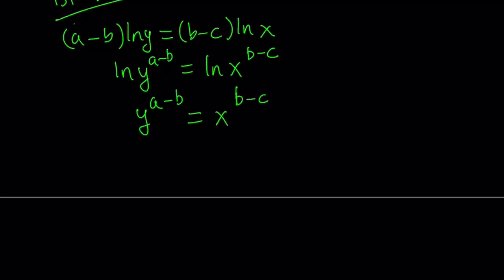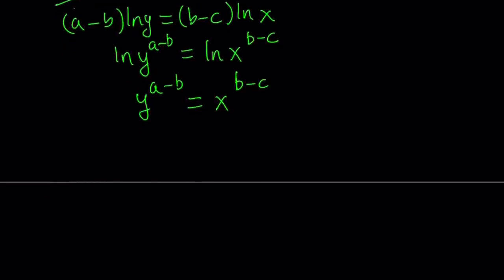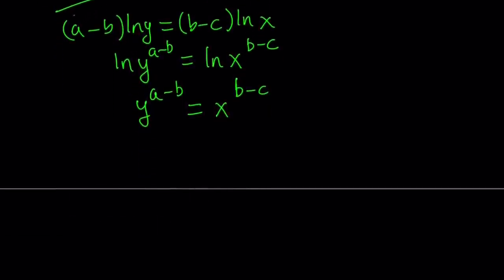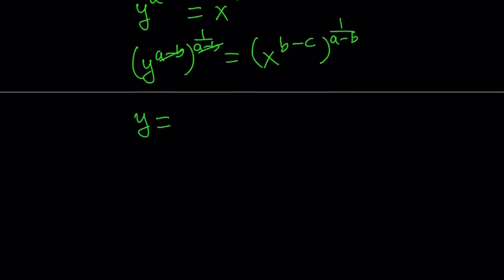Again, a, b, c are all different. So a minus b or b minus c or c minus a can never equal zero. Great. So here's what I'd like to do from here. I want to isolate y and write it in terms of x. So let's go ahead and raise both sides to the power 1 over a minus b. And then from here, a minus b cancels out, and we end up with y on the left-hand side. And on the right-hand side, we get x to the power b minus c over a minus b. So this is something we're going to use later. Let's go ahead and save it for later.